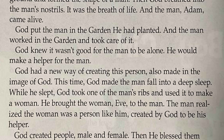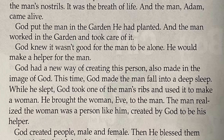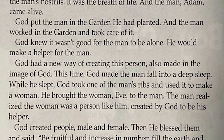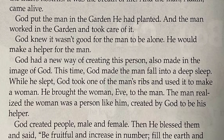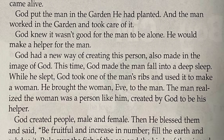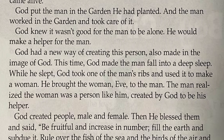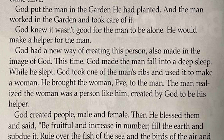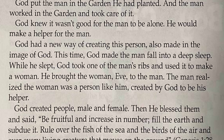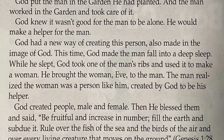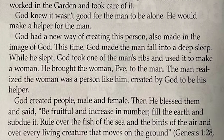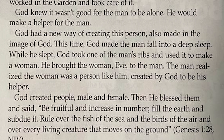God knew it wasn't good for the man to be alone. He would make a helper for the man. God had a new way of creating this person, also made in the image of God. This time, God made the man fall into a deep sleep, and while he slept, God took one of the man's ribs and used it to make a woman.